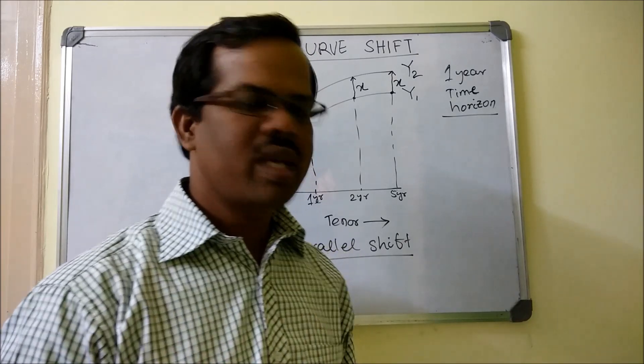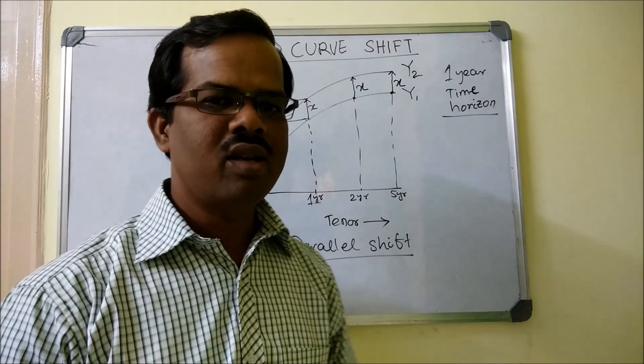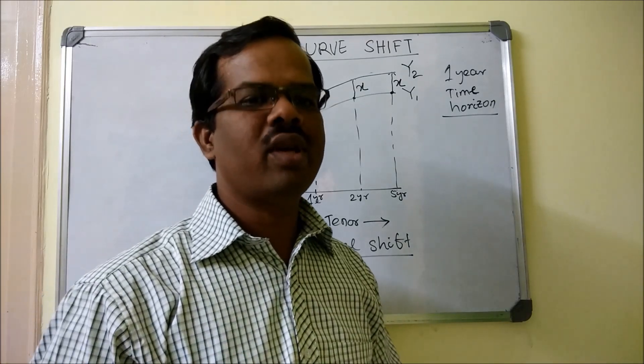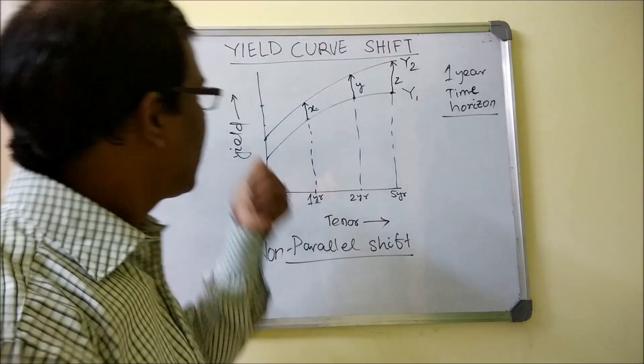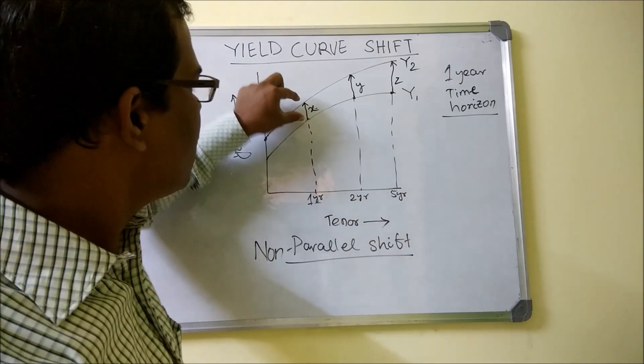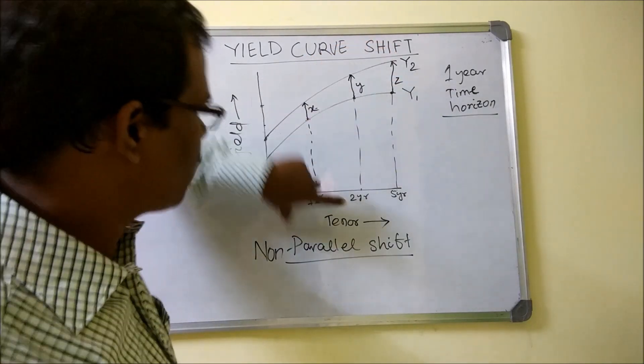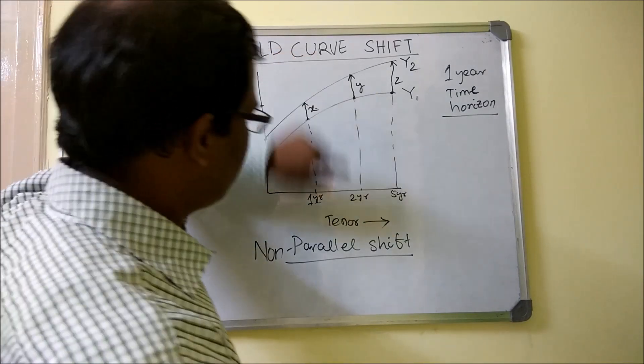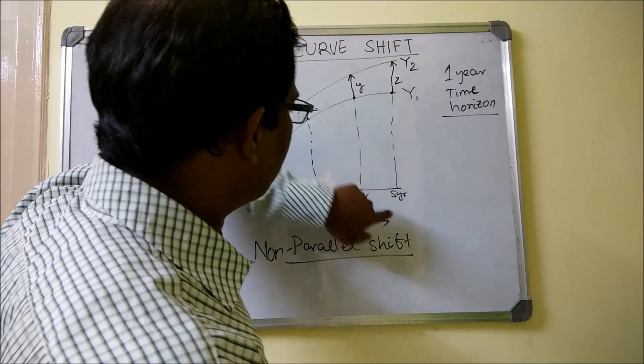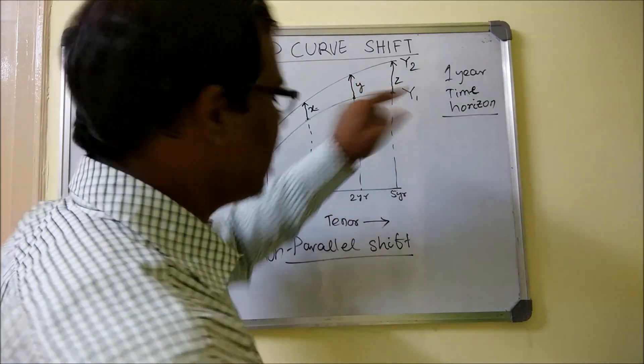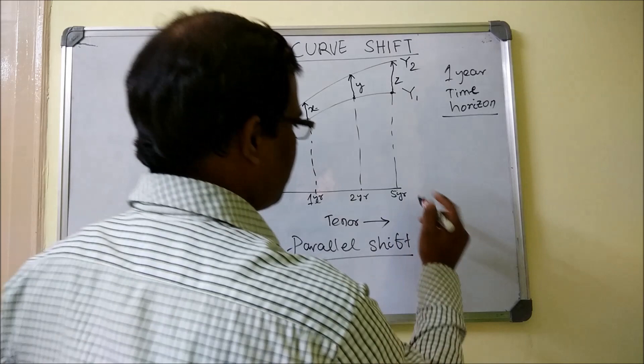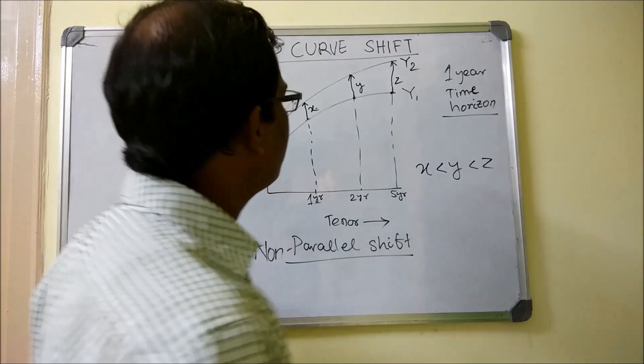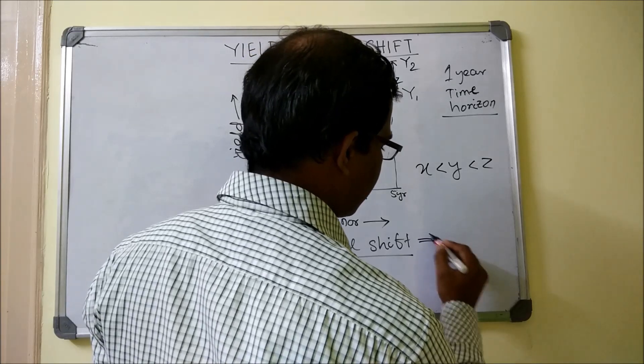How often you will see that a perfect parallel shift is very rare in the real world. The other form of shift is called the non-parallel shift. I've shown you a case of non-parallel shift where the changes in the yield is not uniform across different tenors. For the first year tenor we have x amount of increase in the yield, for the second year tenor we have y amount of increase, and for the fifth year tenor we have z amount of increase, where x is less than y is less than z. If this is the scenario, then this yield curve will be called a steepening yield curve.